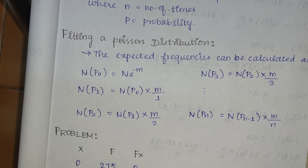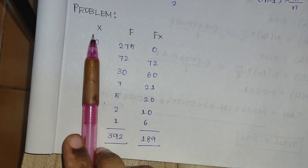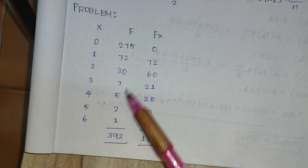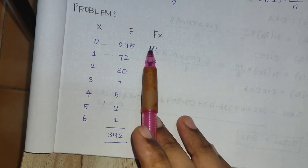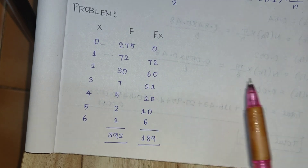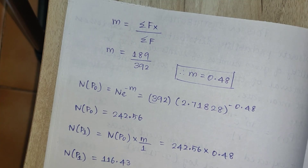We will now see the problem statement: fit the Poisson distribution to the following data. We have x values listed down and f values listed down. We compute the product fx, sum the fx values to find the total, and from that we derive m.